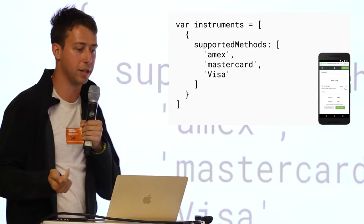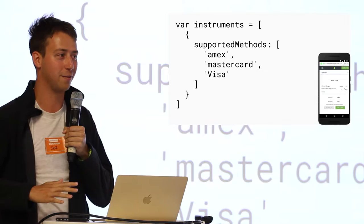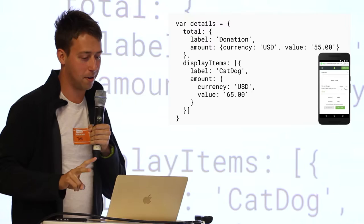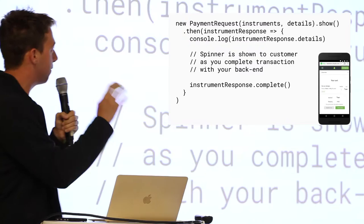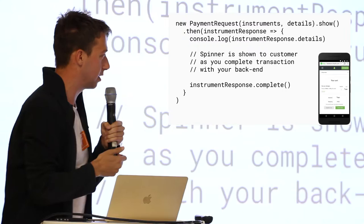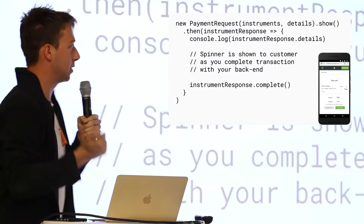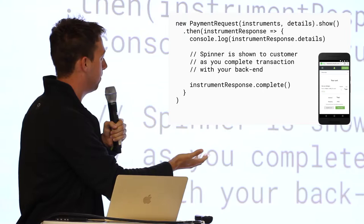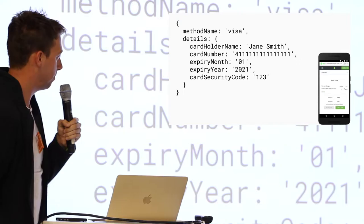What you need for Payment Request is two objects. The first is the supported payment instruments — right now just credit cards, so you put the payment method identifiers in there. This GIF on the right is actually a demo of Android Pay, very similar to the credit card flow. The second object is the payment method details: the total and all the items — you can itemize your transaction. When you give those two objects to Payment Request and call show, that causes the native dialogue to pop up. The user can choose their shipping and payment method, and when they press pay it resolves a promise and calls your callback. The instrument response contains the details — the raw credit card object.